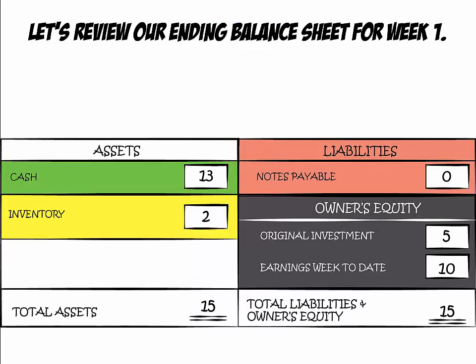Let's review the ending balance sheet for Week 1. At the end of Week 1, you had $13 in cash and $2 worth of finished lemonade, bringing total assets to $15. In the Owner's Equity area, the balance sheet reflects your $5 original investment and $10 in earnings week to date. Our liabilities were zero, bringing total liabilities and owner's equity to $15. We are in balance.